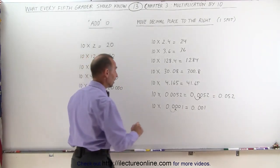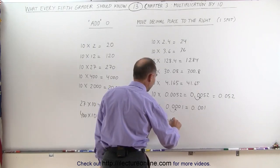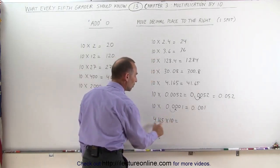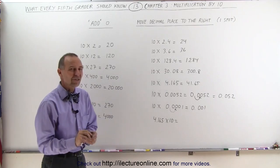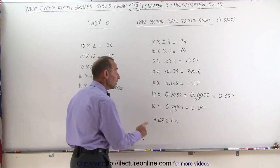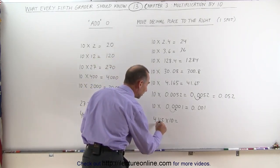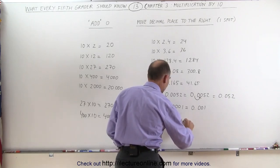and this becomes 4,000. Also, when we're dealing with decimal places like this, if we have the number 4.165 times 10, again, it doesn't matter which number comes first. With multiplication, they call that the commutative property, not that we need to know that yet, but what we do here is simply move the decimal place over one spot like this, and this then becomes 41.65.